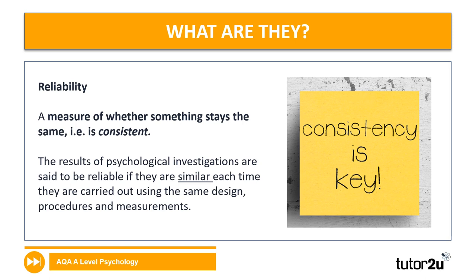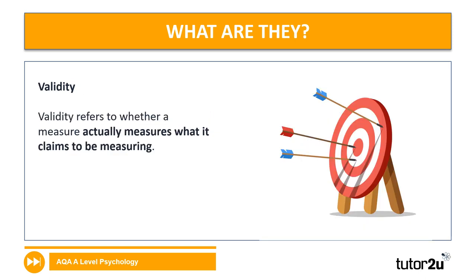The next one is validity. Validity — again, one word to summarize it. What is validity truly about? It's about the accuracy of what I'm doing — so whether I'm measuring what I'm supposed to be measuring. Students often mix up these terms.